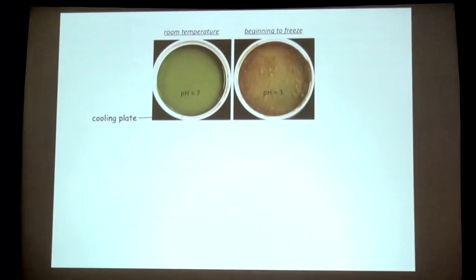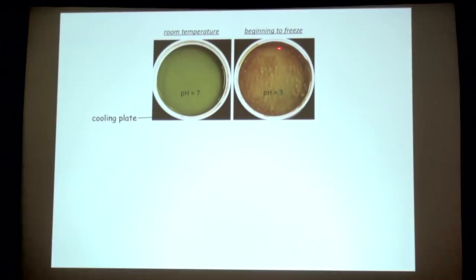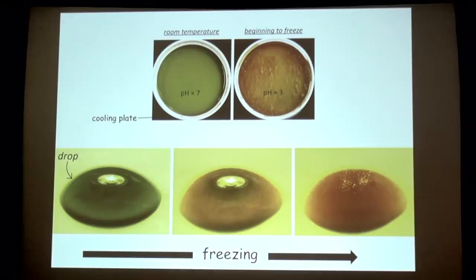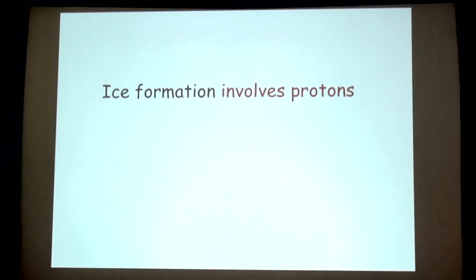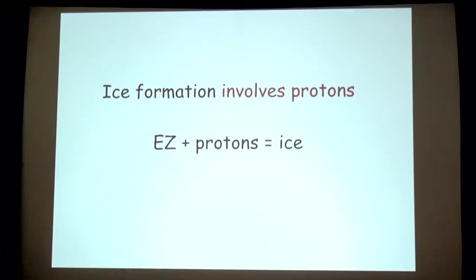Another experiment: a cooling plate with a little dish of water and pH dye showing neutral pH. As we cooled and it started to freeze around the edges, the color changed from green to red-orange, corresponding to pH 3 — a huge number of protons. The same effect was observed with a droplet undergoing freezing. So it's clear that ice formation absolutely involves protons. Ice formation equals exclusion zone plus protons.